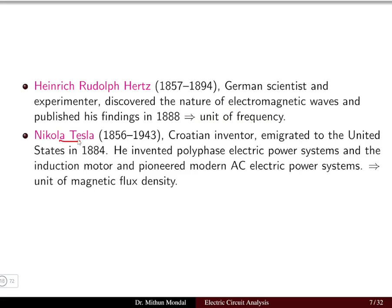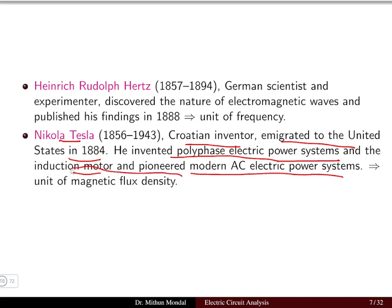Nikola Tesla, the famous prolific inventor, migrated to the United States in 1884. He invented the polyphase electric power system, the induction motor, and pioneered the modern AC electric power system. The unit of electromagnetic flux density — the Tesla — is named after him. These were the famous scientists who contributed phenomenally to the field of electrical engineering.